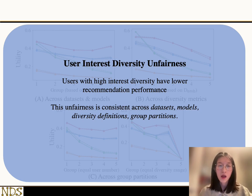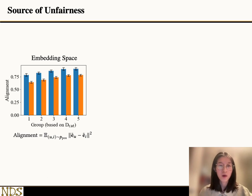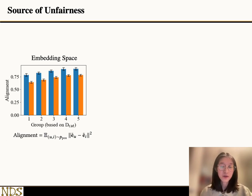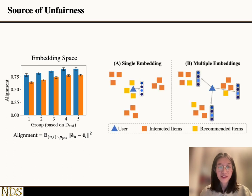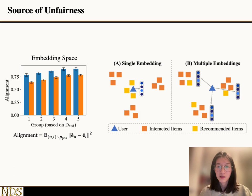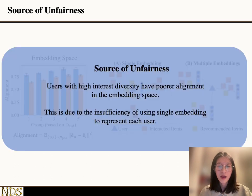Why does this happen? We further look into the source of unfairness in the embedding space, and we find that users with high interest diversity tend to have poorer alignment performance. We hypothesize that this is related to the insufficiency of using a single embedding to represent diverse interests, which motivates us to use multiple embeddings to represent these diverse interests.